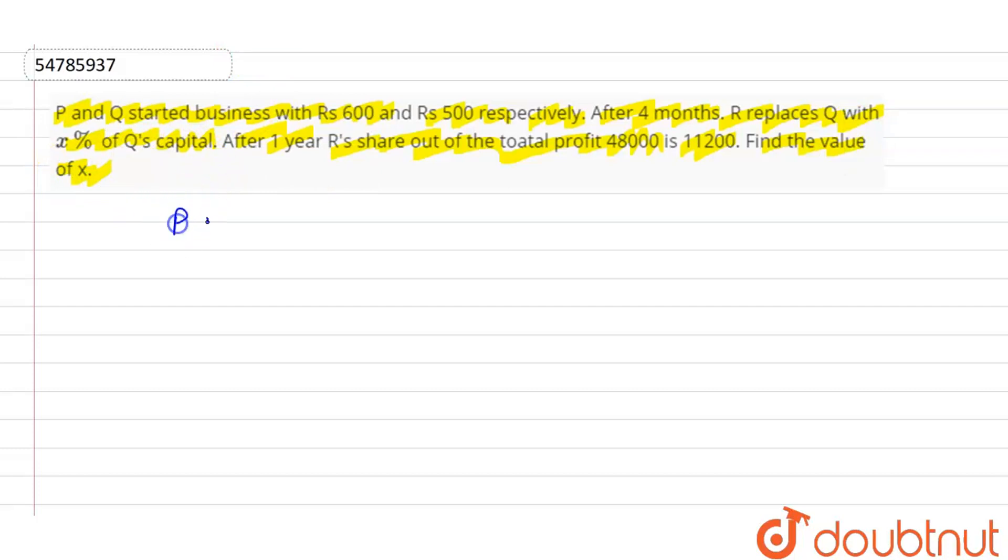What do we need to do? We take ratio of P, Q, and R share. P's share is how much? P's investment is 600 for 1 year. Q's share is 500, and how many months have they invested? They left after 4 months, so 4 months. And R's share is how much? X percent of Q's capital. X percent of Q's capital is 500. Into time, how much? After 4 months, it is 8 months.